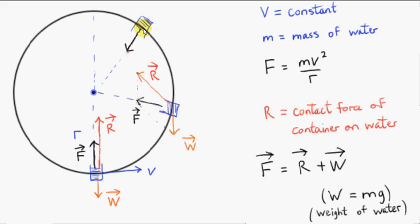Now let's consider the water in this position. The weight vector is vertically down — no change there for vector W, it's constant. Vector F is constant in magnitude, but its direction is always changing; the direction has to be towards the center of the circle. Again, we can use the parallelogram law to find a vector such that when we add it to W, we get vector F. So vector R looks like this now.